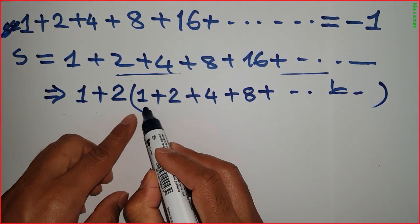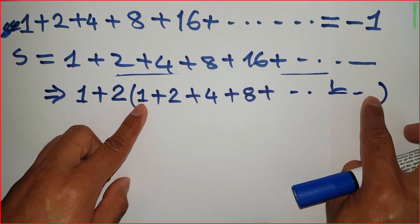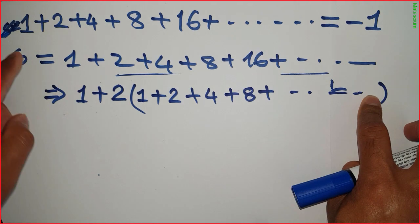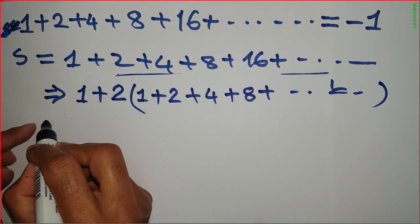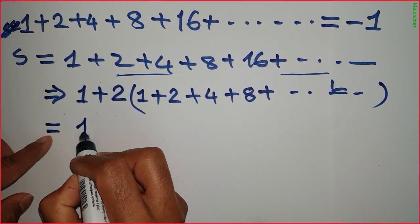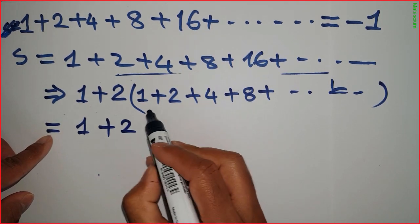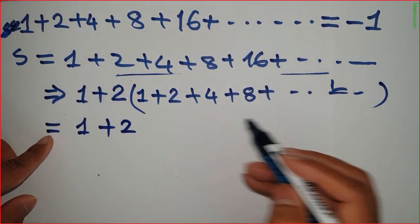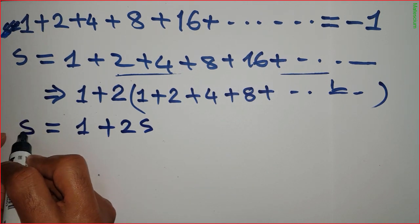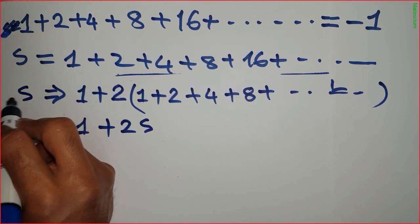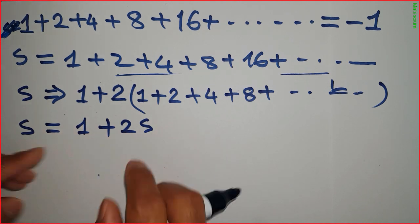Look here — this 1 plus 2 plus 4 plus 8 plus dot dot dot inside the bracket is the same series S again. So the expression becomes 1 plus 2S.